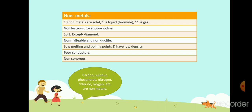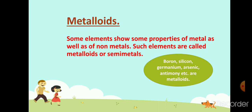Some common examples of non-metals are carbon, sulfur, phosphorus, nitrogen, chlorine, bromine, iodine, etc. Now, some elements show the properties of both metals and non-metals. These types of elements are called semi-metals or metalloids. For example, boron, silicon, germanium, arsenic, and antimony — they all are metalloids.